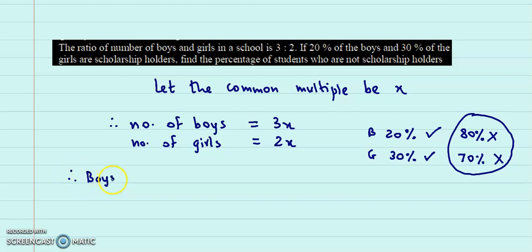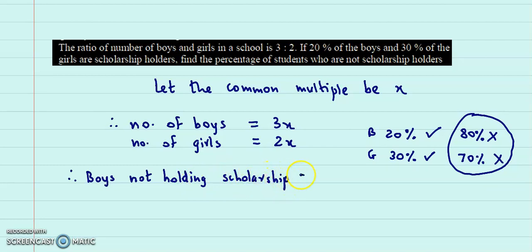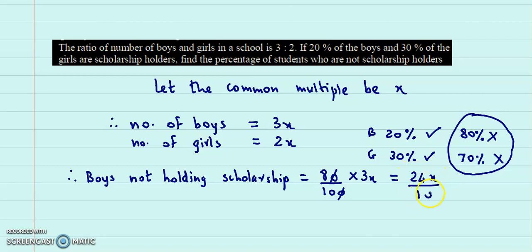The number of boys not holding scholarship will be 80% of the total — that is 80 upon 100 into 3x. We can cancel one zero, giving us 24x upon 10.